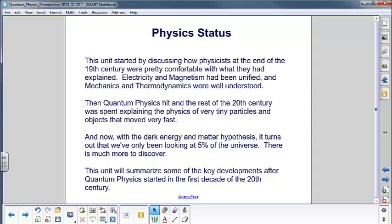Physics status. We started out by discussing how physicists at the end of the 19th century were pretty comfortable with what they had. Electricity and magnetism had been unified, mechanics and thermodynamics were well understood, things were good.